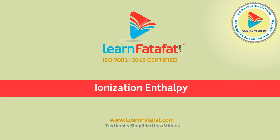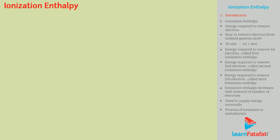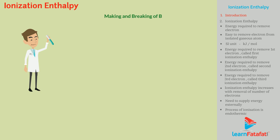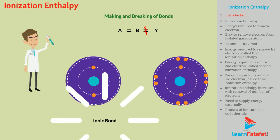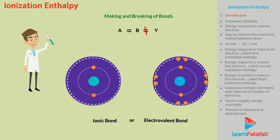Ionization Enthalpy. Dear student, you are genius enough to understand that chemical reactions involve making and breaking of bonds. Such bonds formed by complete transfer of electron from one atom to another is called ionic bond or electrovalent bond. This means that an electron from one atom is removed and then accepted by another atom.